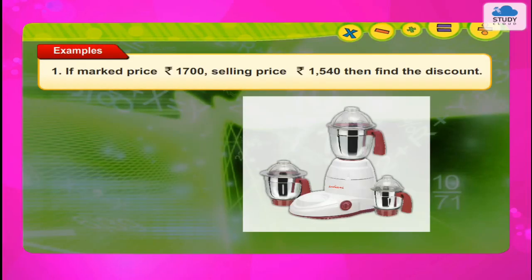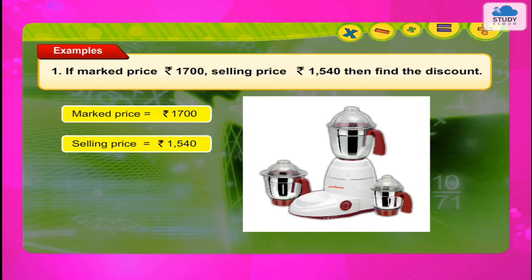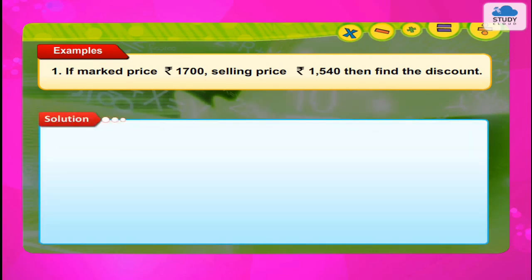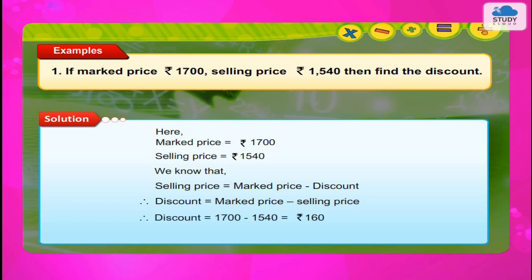Example 1: If marked price = Rs. 1700 and selling price = Rs. 1540, then find the discount. Solution: Here, marked price = Rs. 1700 and selling price = Rs. 1540. We know that selling price = marked price minus discount. Therefore, discount = marked price minus selling price. Therefore, discount = Rs. 1700 − Rs. 1540 = Rs. 160.